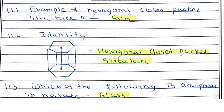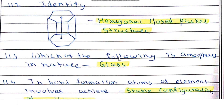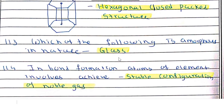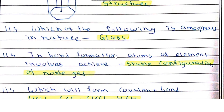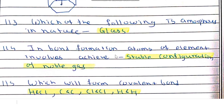Glass is amorphous in nature. Other examples of amorphous substances include plastics and rubber. In bond formation, atoms of an element achieve the stable configuration of a noble gas.